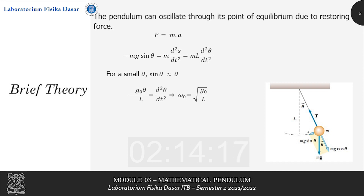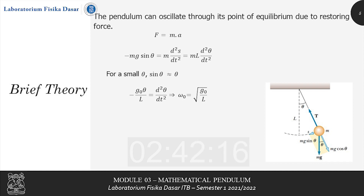For a small theta, sine theta can be approximated by theta. Crossing out the mass from both sides of the equation, we now have minus g₀ times theta divided by l equals the second derivative of theta over t, otherwise known as angular acceleration. With theta on the left side, we can translate this into omega₀, which represents the angular velocity, equal to the square root of g₀ divided by l. The subscript 0 on g₀ and omega₀ represents the fact that sine theta is approximated as equal to theta.